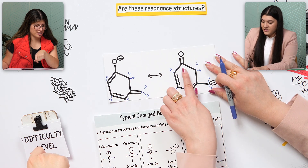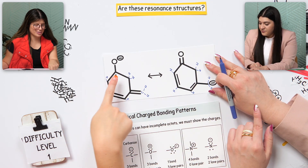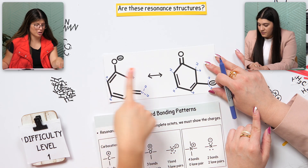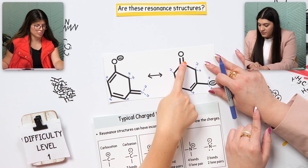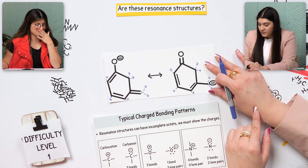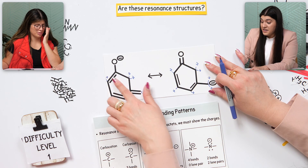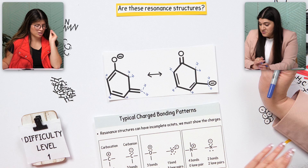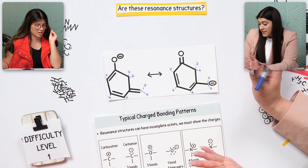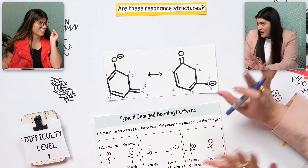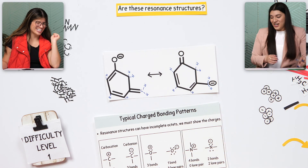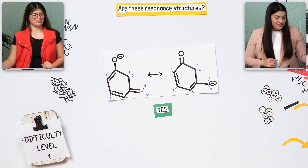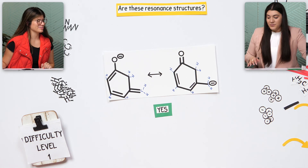What about these center carbons? This one has the octet — one, two, three, four. They're the same — they already have a complete octet, there are no hydrogens there. We didn't move anything, so because no atoms were moved or removed, it IS a resonance structure. The answer is yes — perfect!